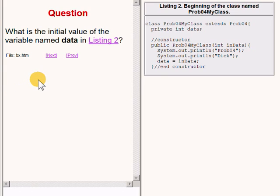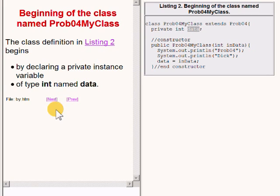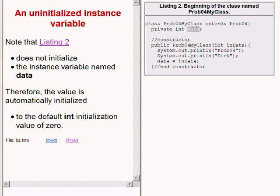Here is another question: what is the initial value contained in the variable named data on the right of your screen? The class definition begins by declaring a private instance variable of type int named data. That code does not initialize the instance variable named data when it is declared. Therefore, the value of the instance variable named data is automatically initialized to the default int initialization value of 0.